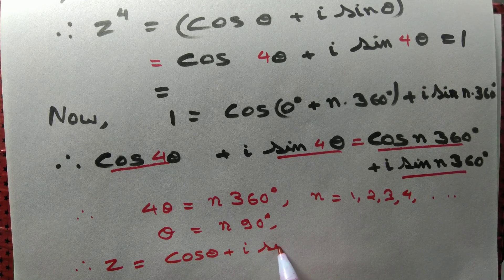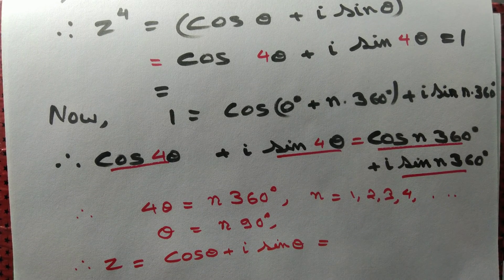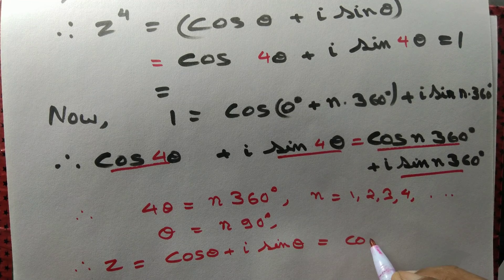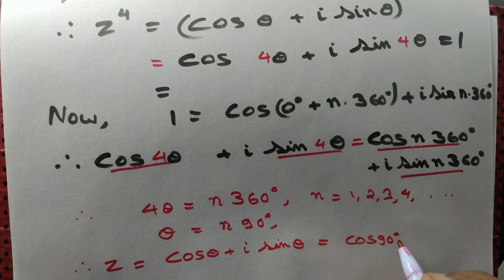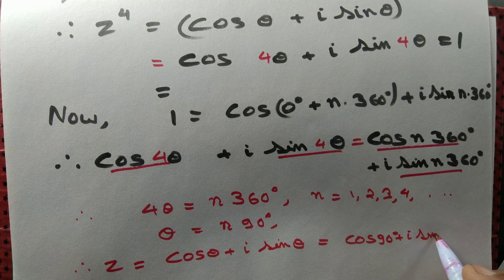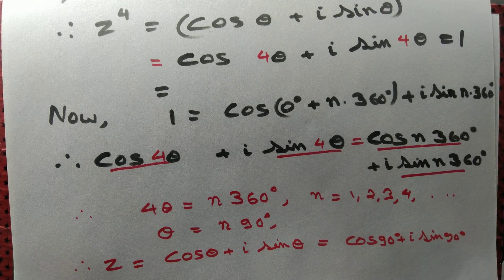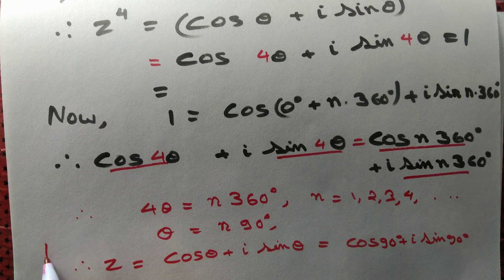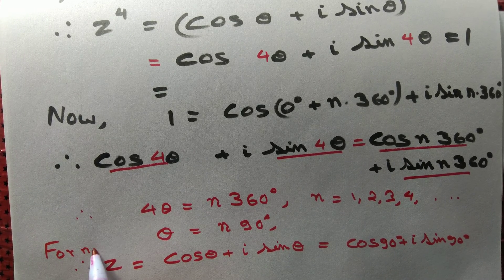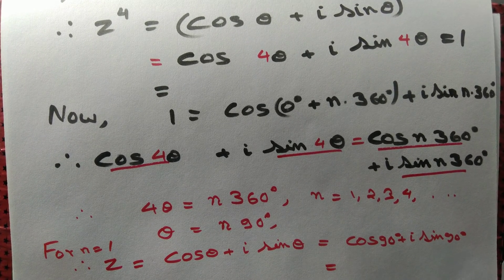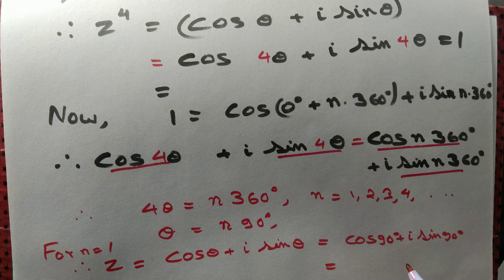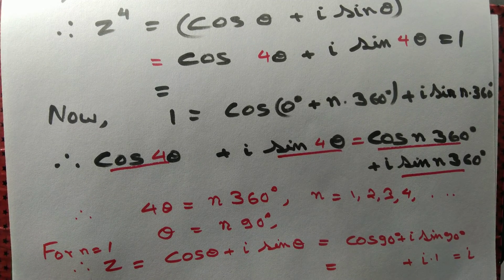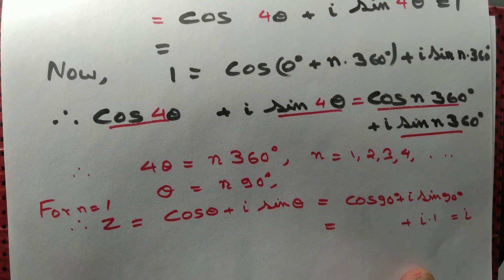For n equal to 1: θ = 90°, so z equals cos90° + i sin90°. cos90° is 0 and sin90° is 1, therefore z equals i. That is one fourth root of unity.